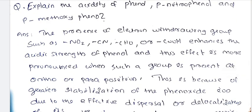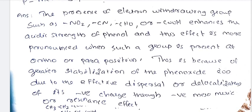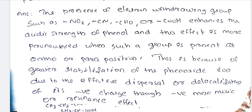Regarding acidity of phenol: p-nitrophenol (paranitrophenol) and paramethoxyphenol differ in acidity based on substituent effects. Methoxy group is an electron donating group. The presence of electron withdrawing groups such as NO2, CN, CHO, or COOH enhances the acidic strength of phenol.